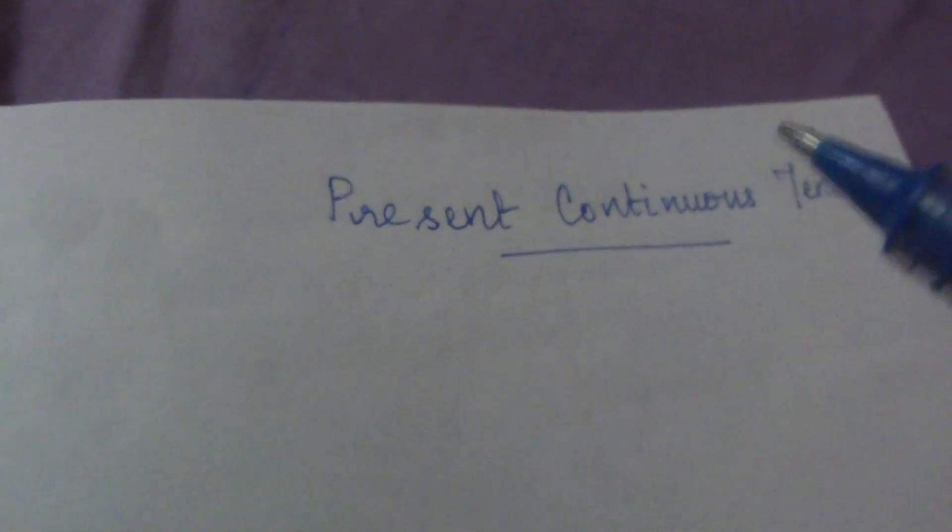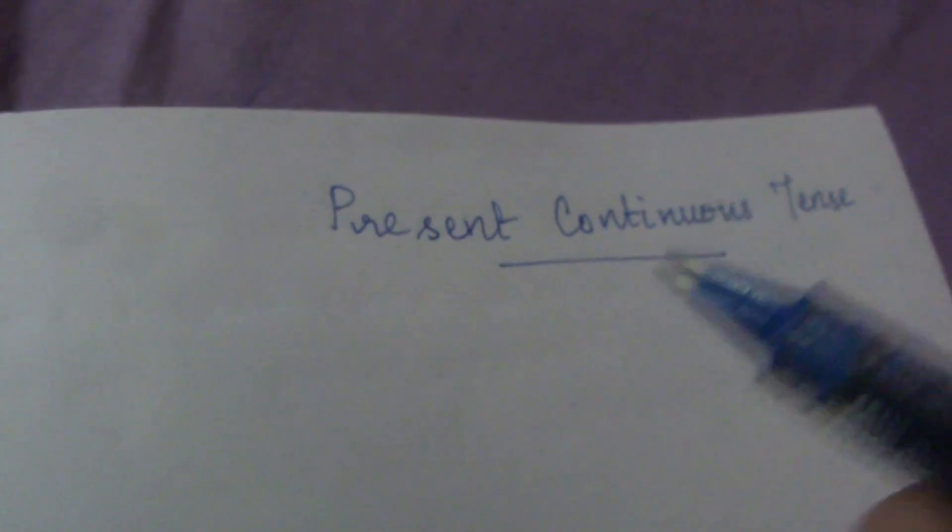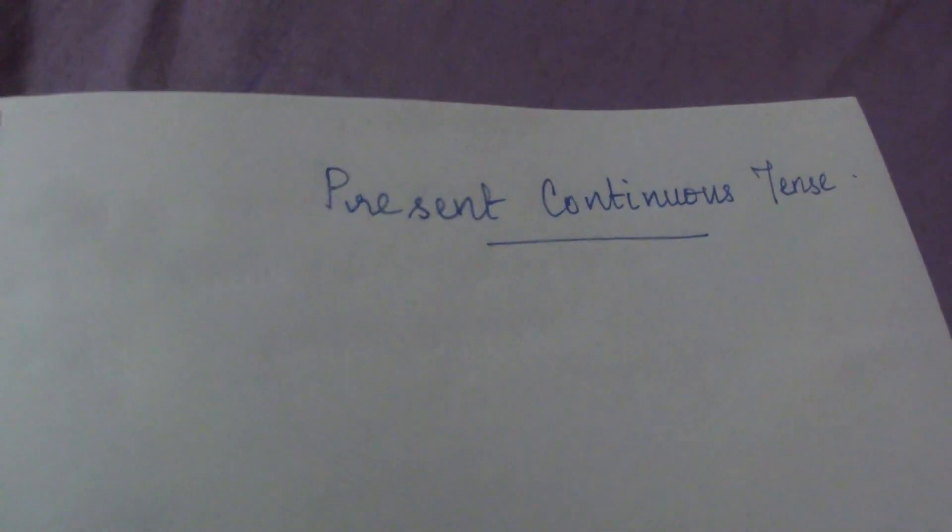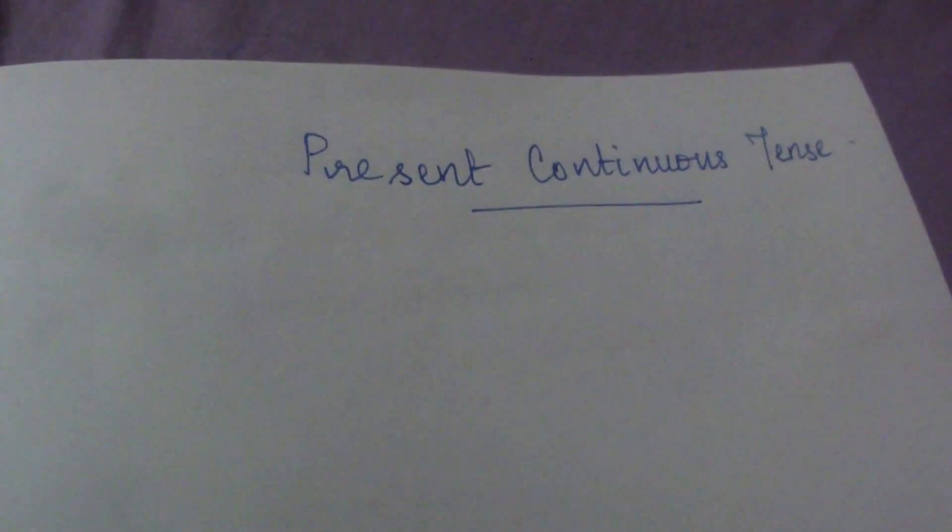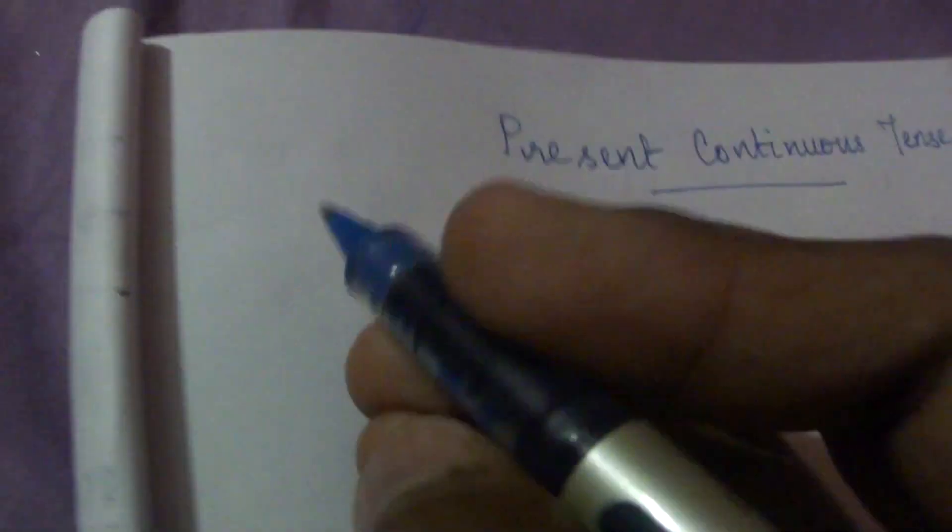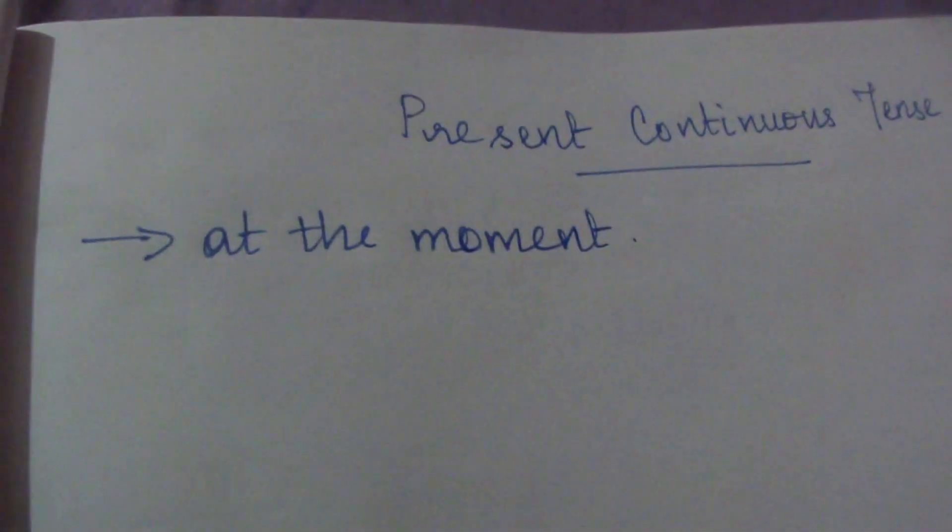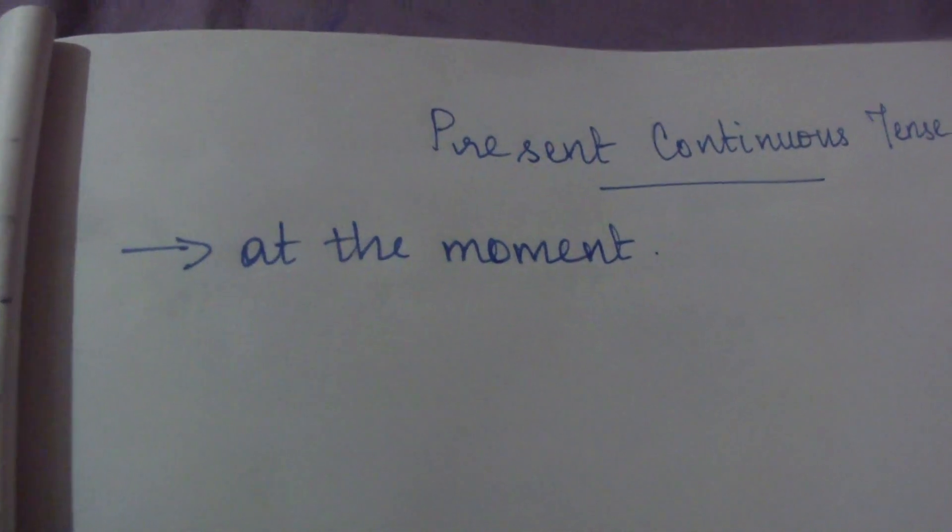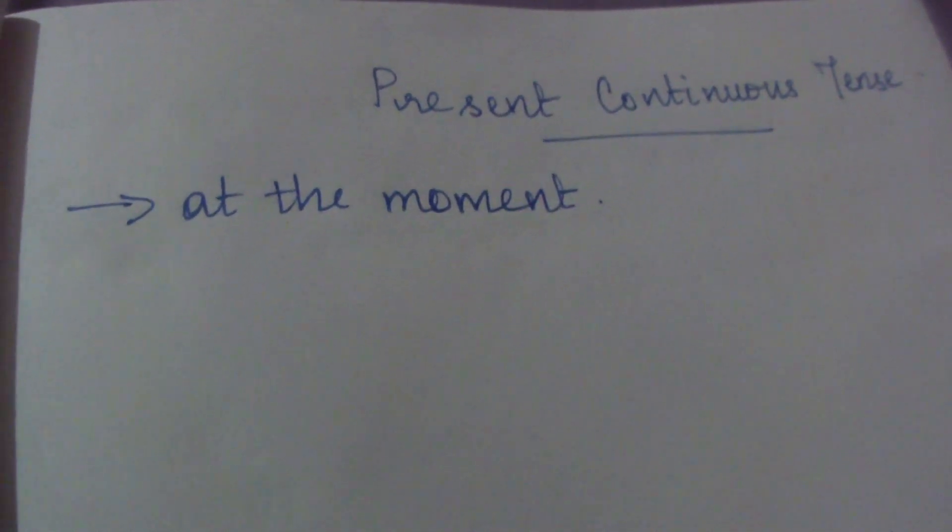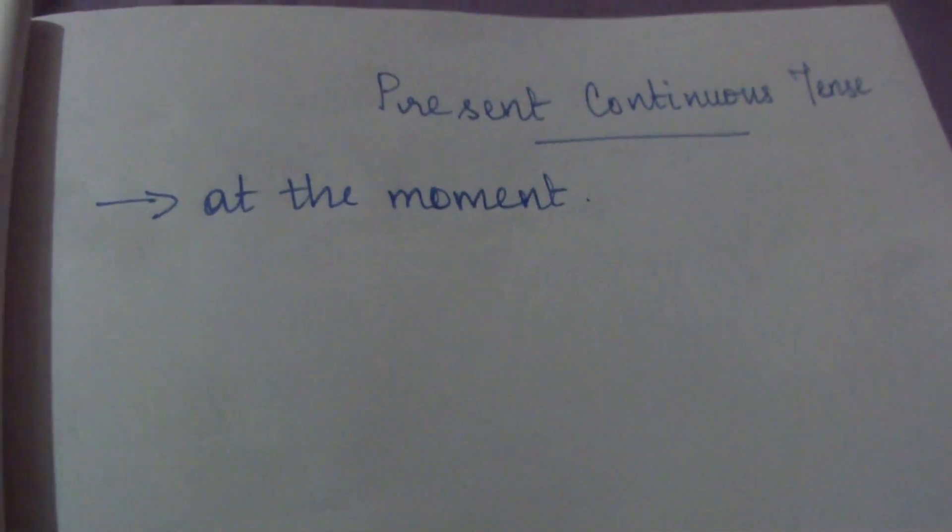Present continuous tense is used in those places where we want to refer to actions which are happening at the moment. For example, I am teaching right now. At this moment, what am I doing? I am teaching. So for actions which happen at the moment, exactly at that moment. I am teaching at the moment. That's what I am doing now and you are listening to this video at the moment or now.